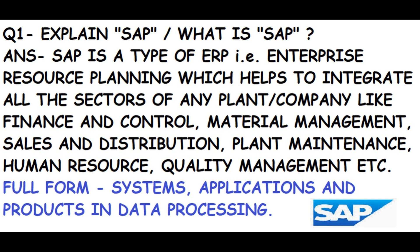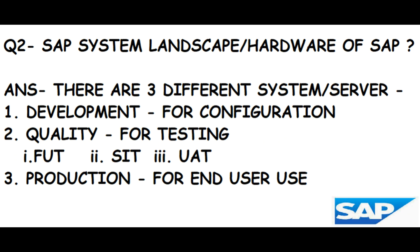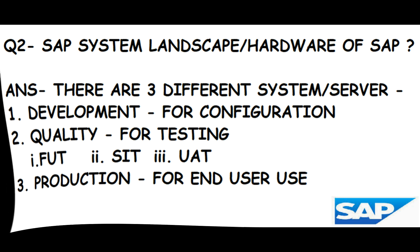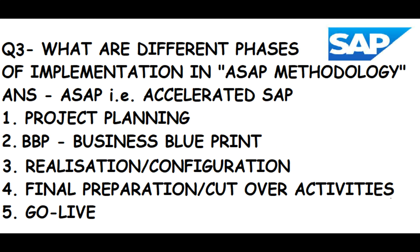The second question is: what are the different types of landscape, hardware, or servers in SAP? First is the Development server, where functional consultants do all configuration. Second is the Quality server, used for testing — first FUT (Functional Unit Test), second SIT (System Integration Test), and third UAT (User Acceptance Test). Third is Production, used by the end user; as functional consultants, we have no role there.